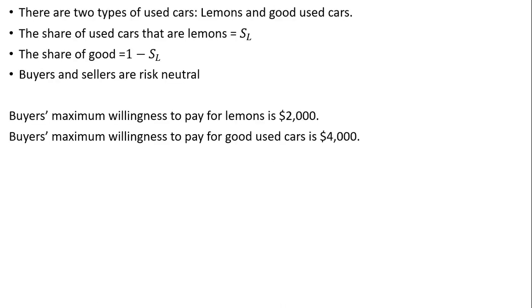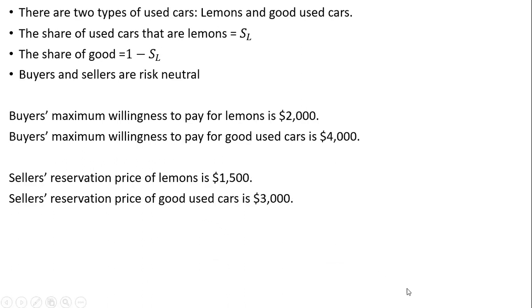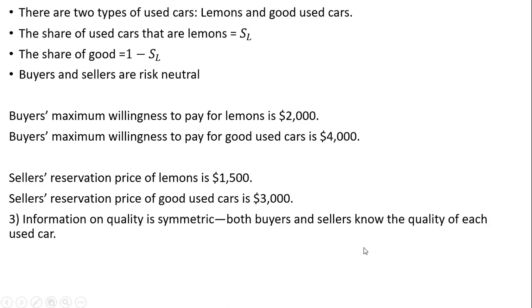Finally, example three. Information on quality is symmetric. Let's assume both buyers and sellers know the quality of each used car.